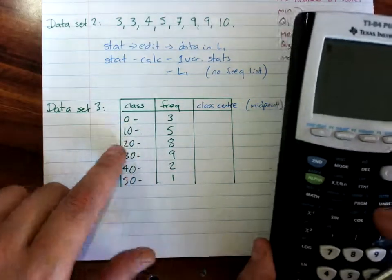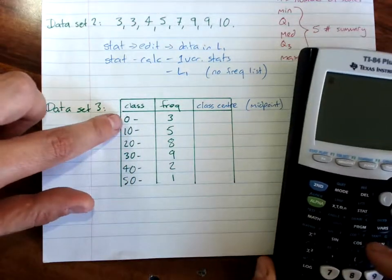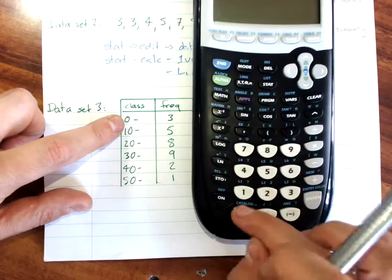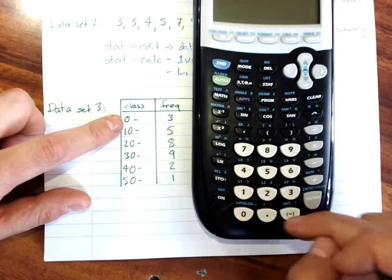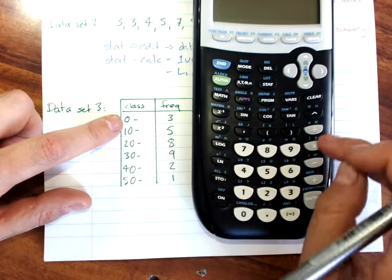To get that, this class is from 0 to 10, you just find the average, 0 plus 10, I know you don't need to do the working, hit enter, divided by 2, the center of this class is 5.